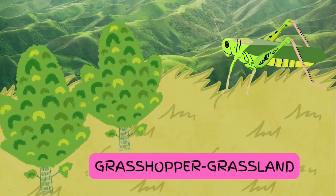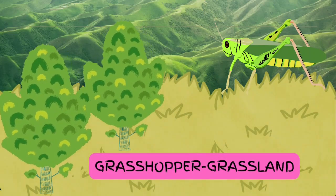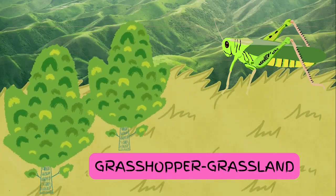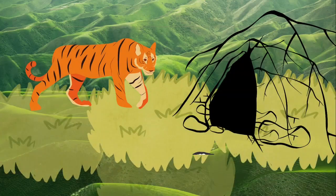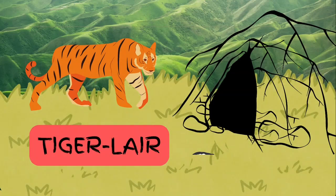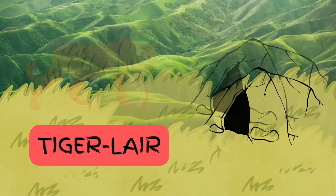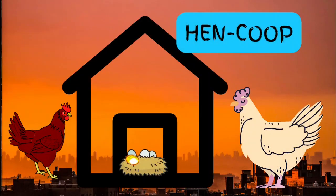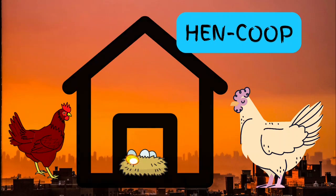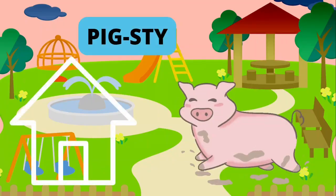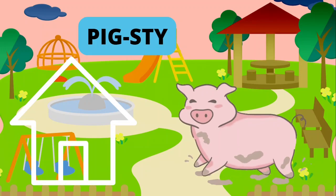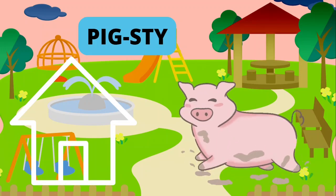Grasshopper — grasshopper lives in a grassland. Tiger — tiger lives in a lair. Hen — hen lives in a coop. Pig — pig lives in a sty.